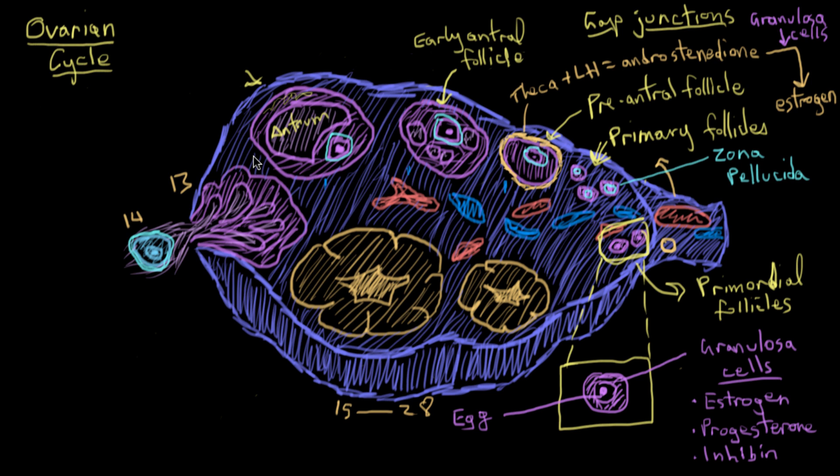And that one that gets ovulated is called the dominant follicle. So let's just say that what we're seeing here is an example of the dominant follicle's development. Because the rest of the ones that we're developing along this pathway sort of degenerate and die off in a process called atresia. And I'll write that at the bottom here. And atresia just means to degenerate.